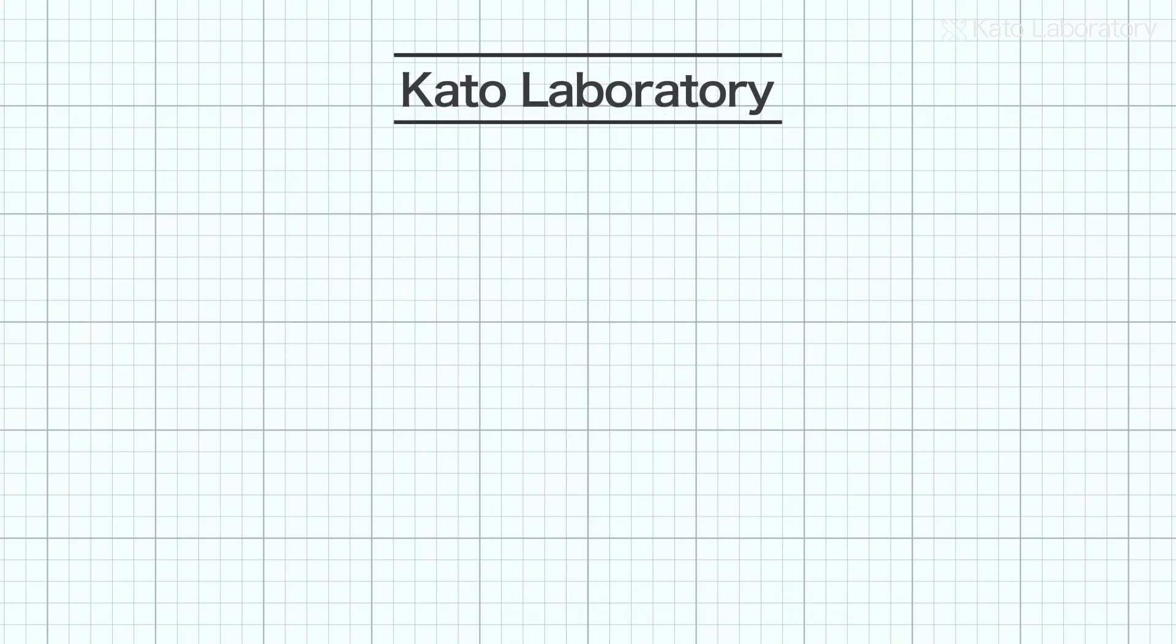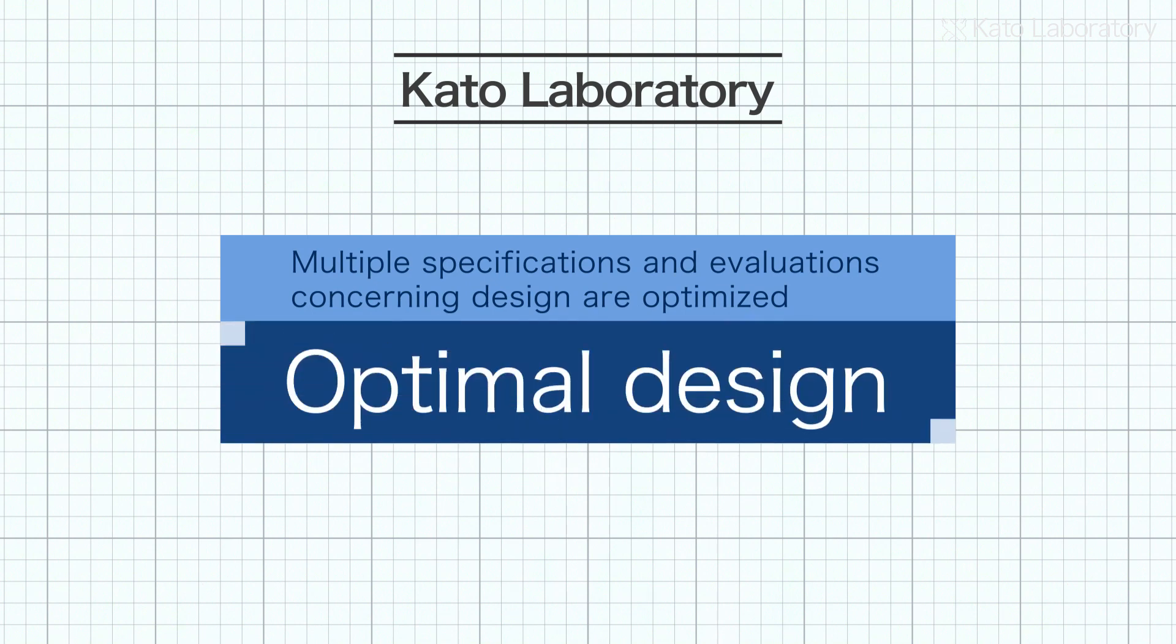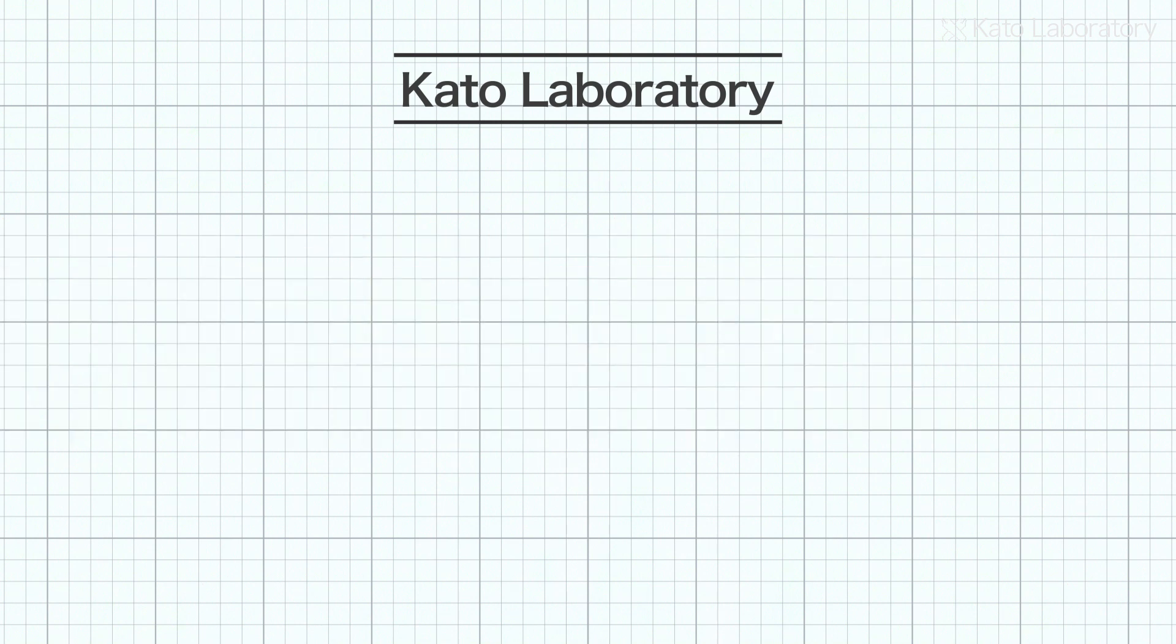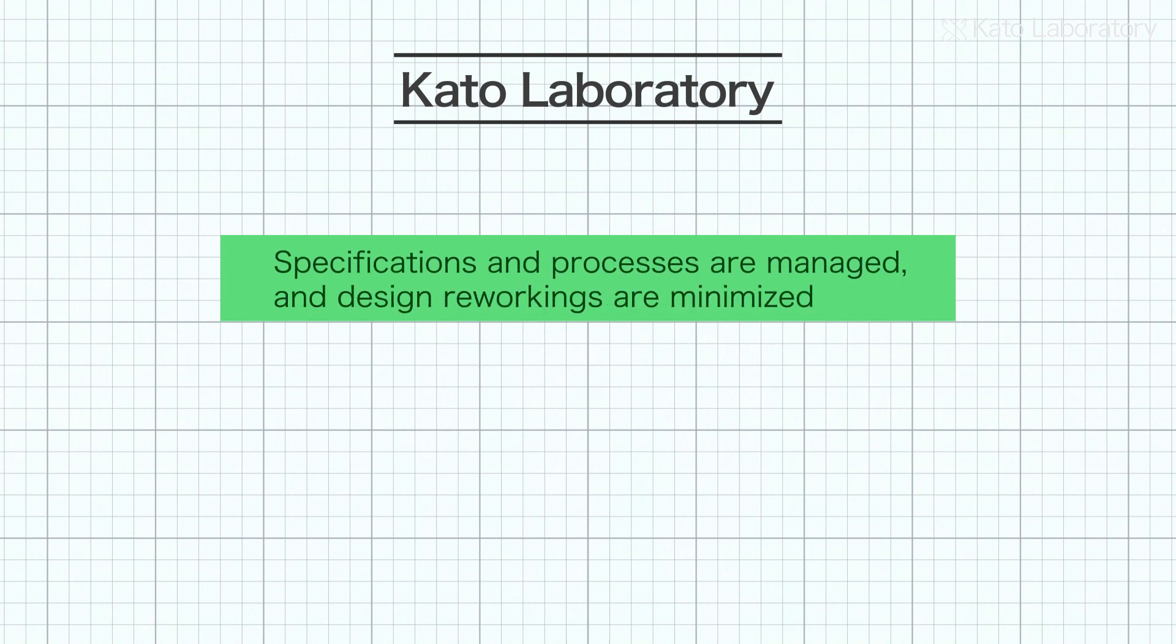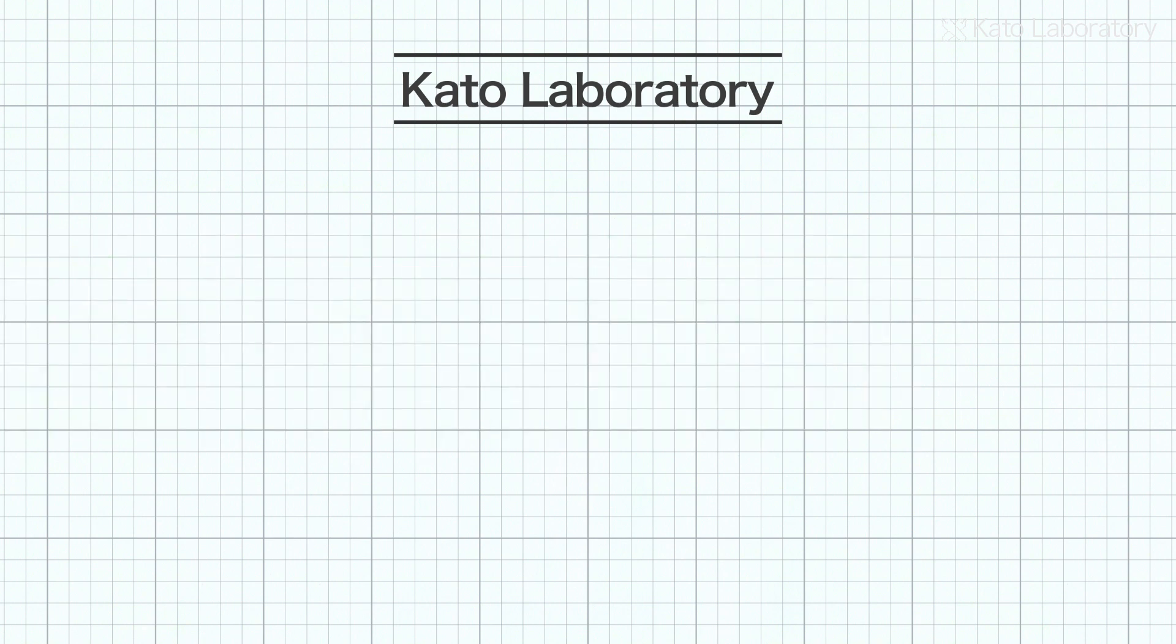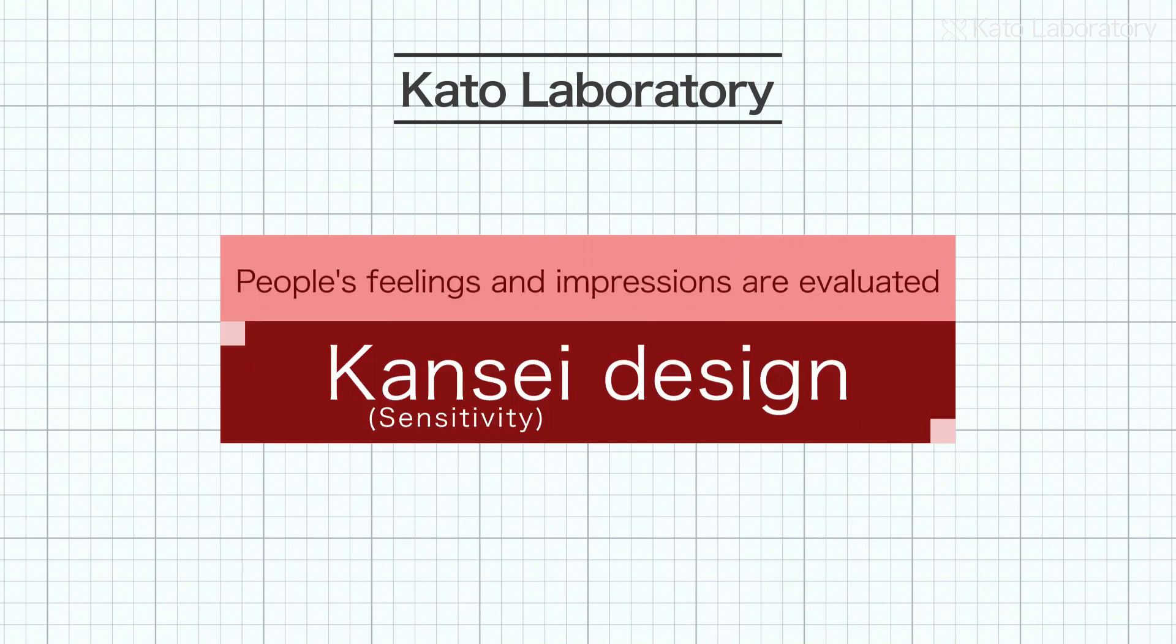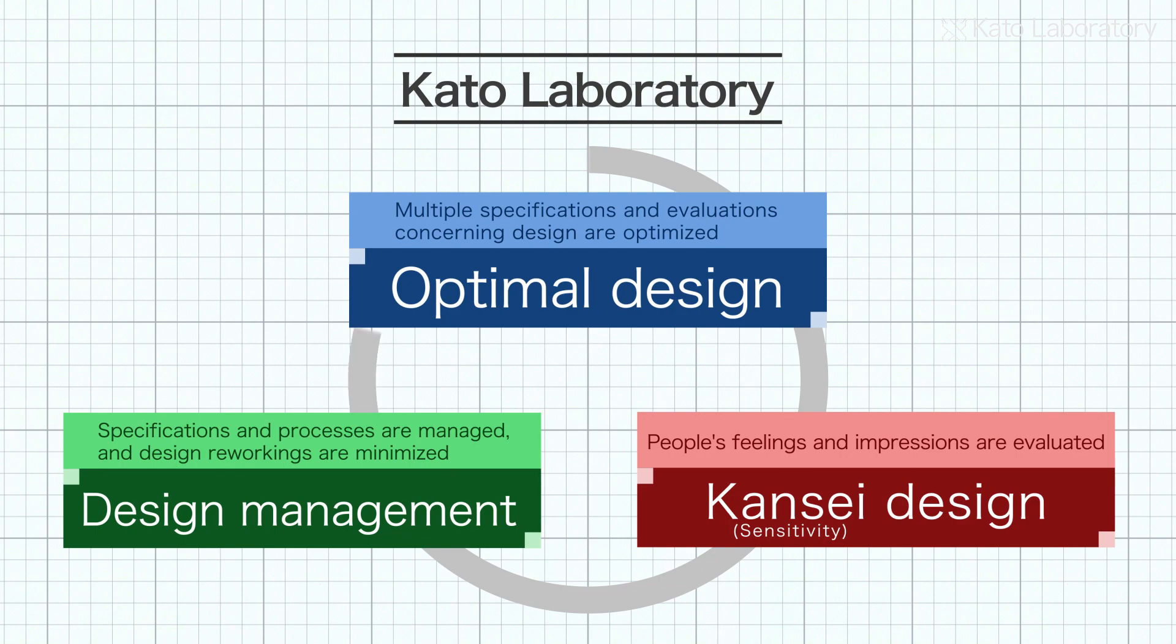The CATO Laboratory has three main topics: optimal design, in which multiple specifications and evaluations concerning design are optimized; design management, in which specifications and processes are managed and design reworkings are minimized; and Kansei sensitivity design, in which people's feelings and impressions are valued.